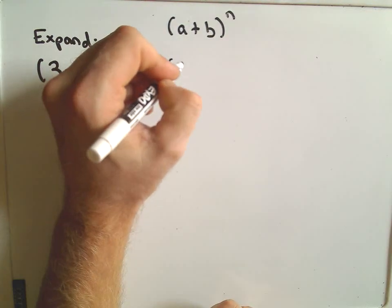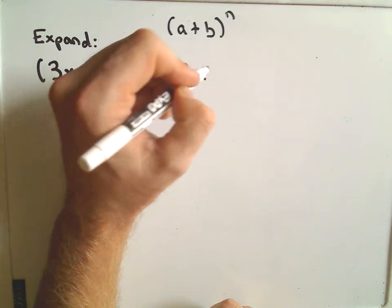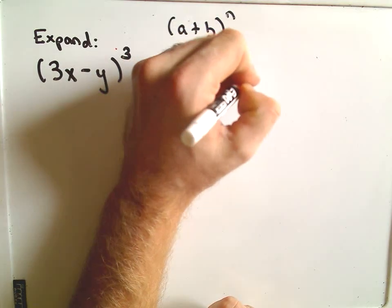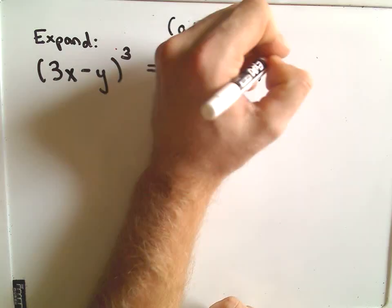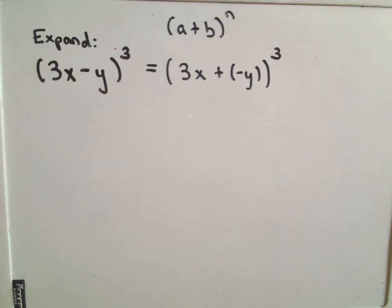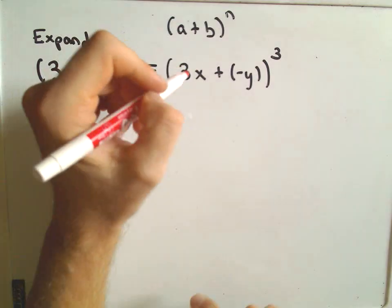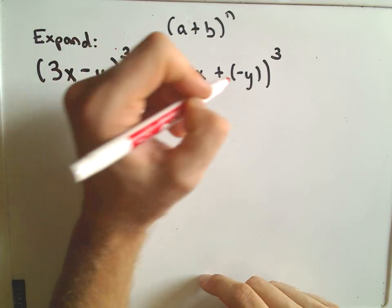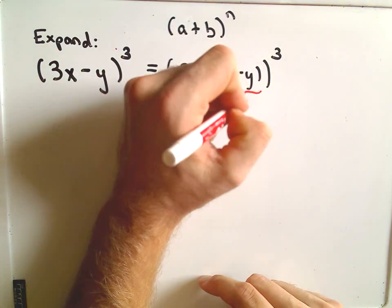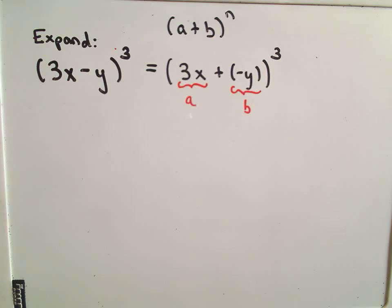So we need to rewrite this. I'm going to rewrite it as 3x plus negative y raised to the third power. So now I do have my a value, so 3x, when I expand this out, my 3x is going to be playing the role of the a value, and negative y is going to be playing the role of the b value.